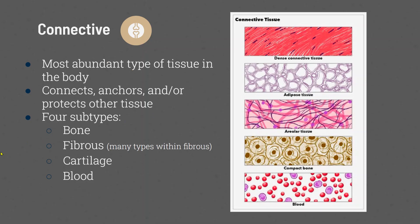Now we're going to talk about connective tissue. It is the most abundant type of tissue in the body — it connects, anchors, and protects other tissues. There are four subtypes. We're going to focus mainly on bone, but there's also fibrous tissue, cartilage, and blood as connective tissues.